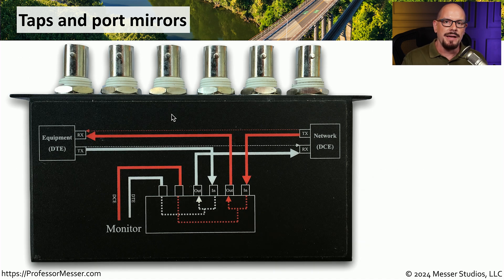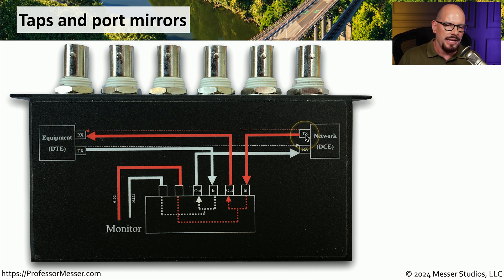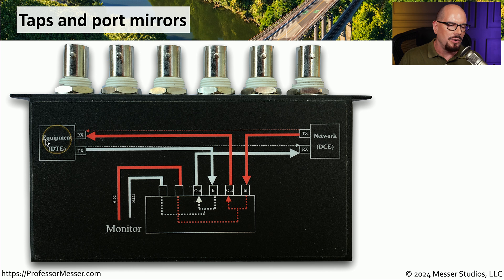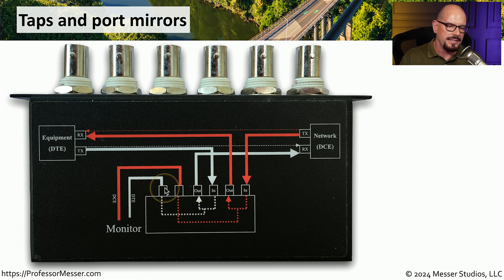Here's an example of a coax tap, but it works very similarly whether you're using fiber or twisted pair copper. You would be connecting two devices, one on each side of the network. There are transmit and receive pairs on each side, and those go into the in and out connections, completing the circuit on each side. A copy of this information is sent to monitor ports on the tap, and that is where you would plug in your analysis tools or protocol analyzer.